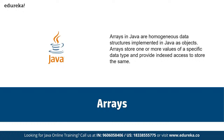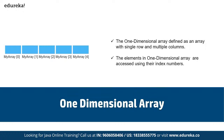For example, a video game may want to keep track of the top 10 scores. Rather than using 10 different variables, we can use a single array name and use index numbers to refer to each score. That's why we have the one-dimensional array and also the two-dimensional array as part of the setup.